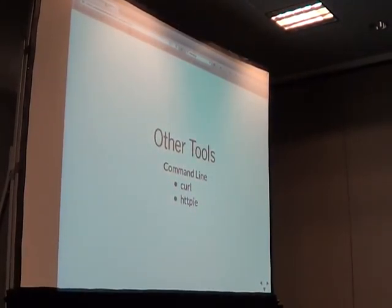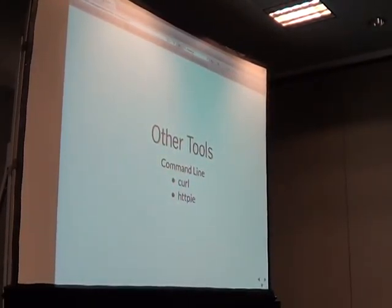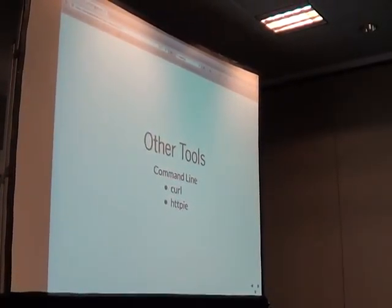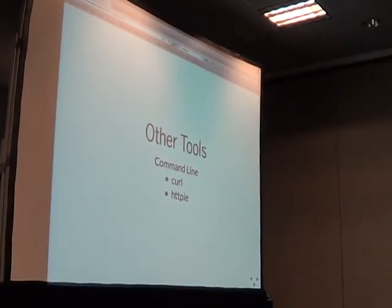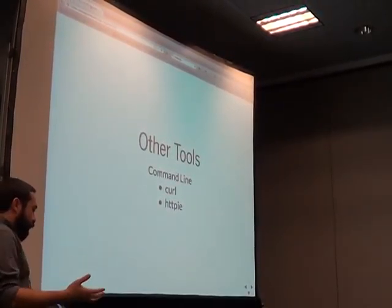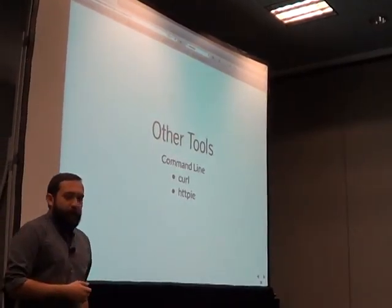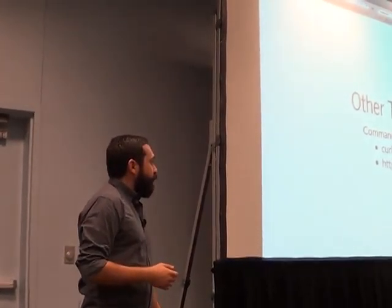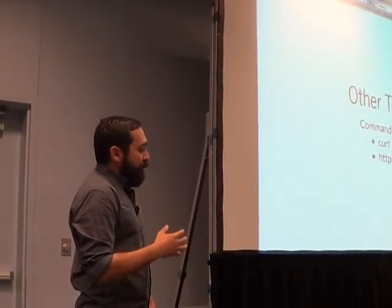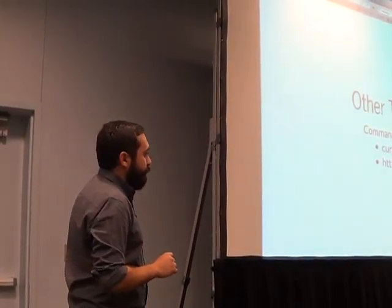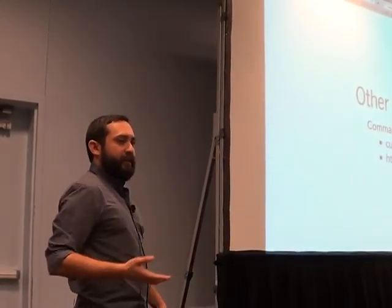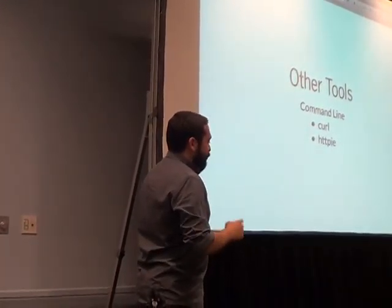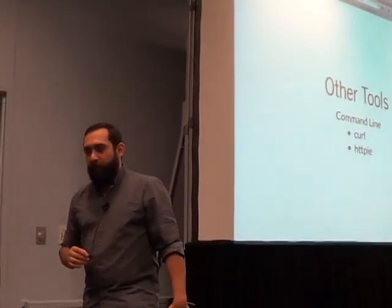Now let's talk about tools. Two of my favorite tools are cURL and HTTPie. These are command-line tools you can use from your terminal to make requests, download files, and interact with web servers. HTTPie is meant to be a replacement for cURL and makes requests in a more streamlined fashion. There's a lot you can do with cURL using flags and adding headers, but HTTPie just makes it a little bit easier.